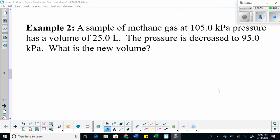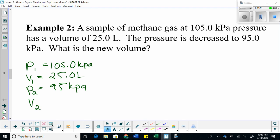Let's do another example. A sample of methane gas at 105 kilopascals has a volume of 25 liters. The pressure is decreased to 95 kilopascals. What is the new volume? So, P1 is 105 kilopascals, V1 is equal to 25 liters, P2 is 95 kilopascals, and V2 is our unknown. We are looking for that final volume.